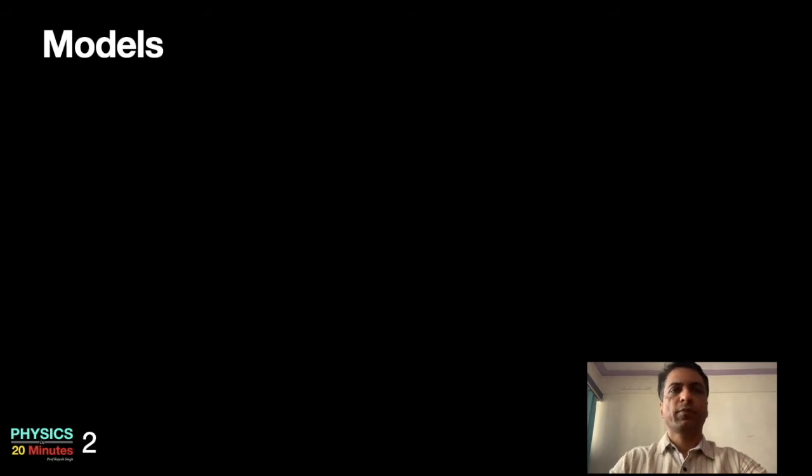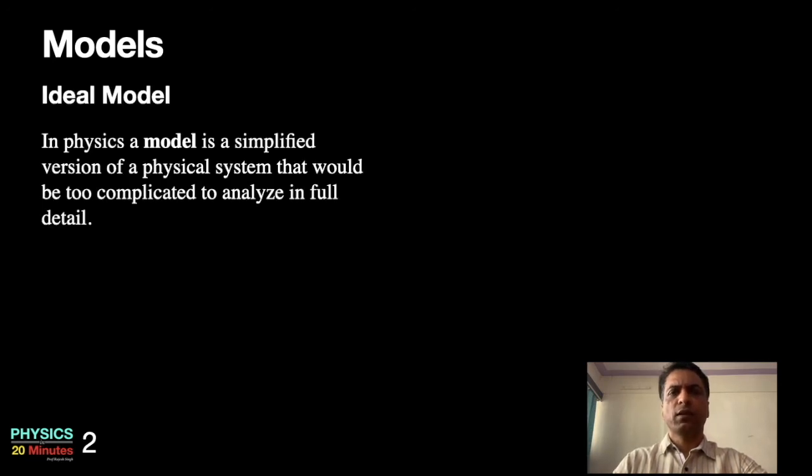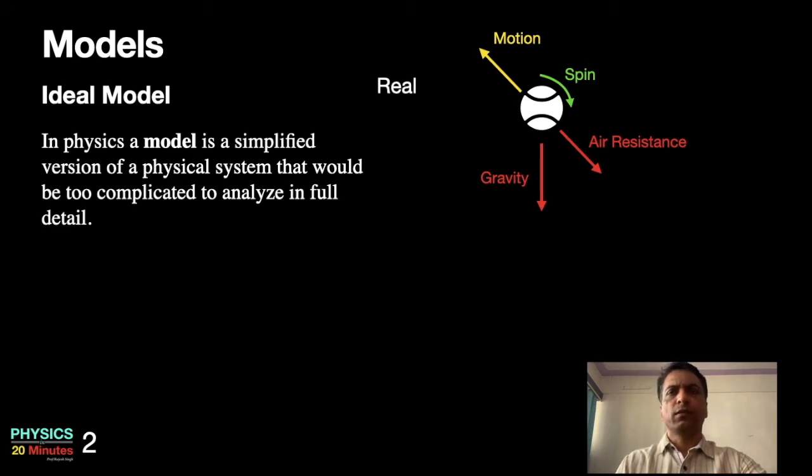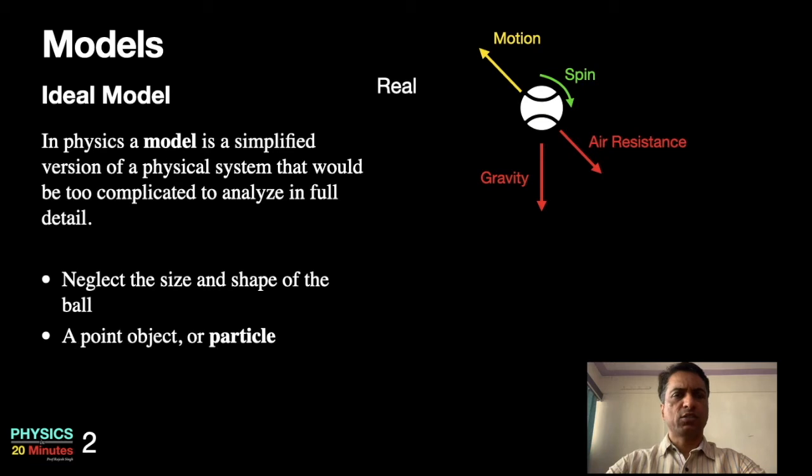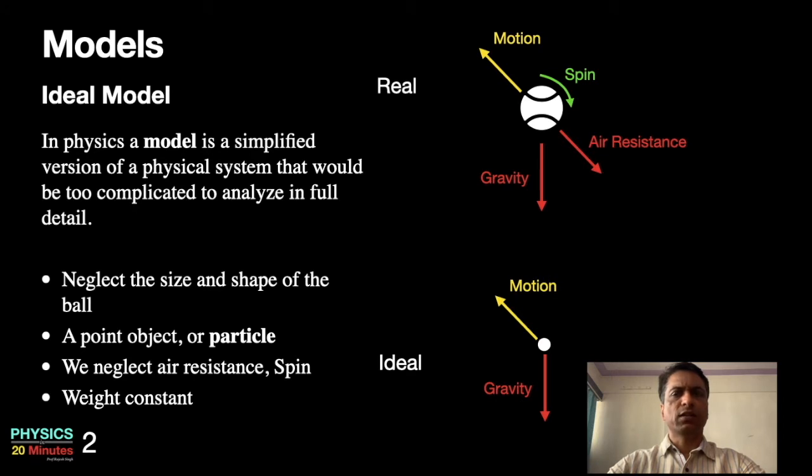Physics believes in model making. What is a model? A model is a simplified version of a real complex scenario. We normally refer to it as an ideal model. For example, look at the motion of this ball. It's moving in the direction shown by yellow. Air resistance normally works opposite to it, gravity works downward, and it might be spinning as well. This in itself looks very complicated. In order to understand this situation, we may simplify it further. We may ignore the air resistance, ignore the size and shape of the ball, assume it to be point-like, and ignore the spin. So now it can be a simplified version where only gravity is working and the point is moving.